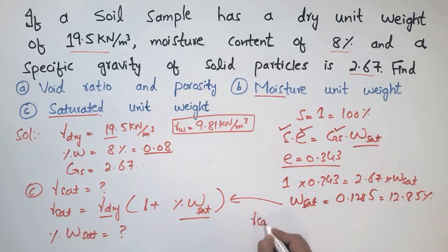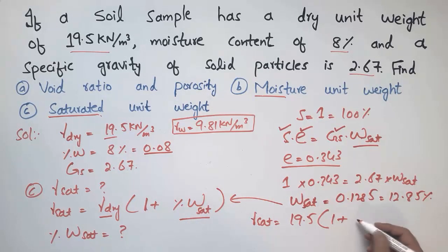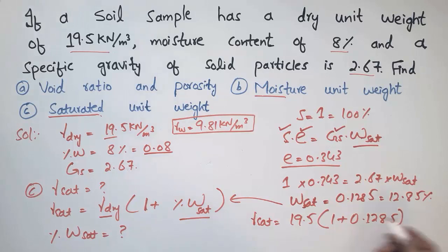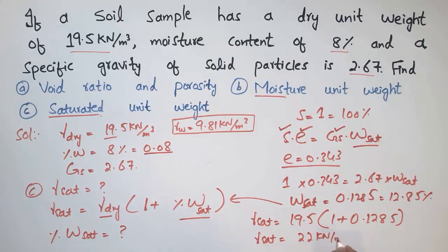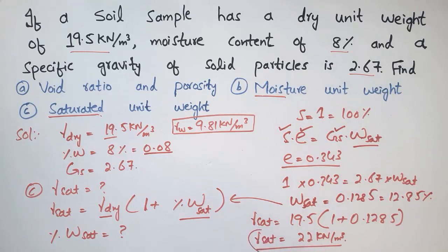Now computing γ_sat: γ_sat = γ_dry × (1 + w_sat) = 19.5 × (1 + 0.1285). This comes out to be 22 kN/m³. This is the saturated unit weight — the condition in which water is fully present in all void spaces of the soil sample.